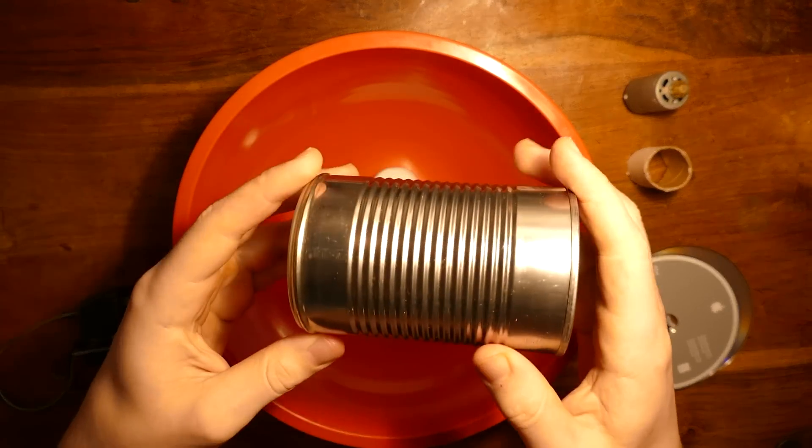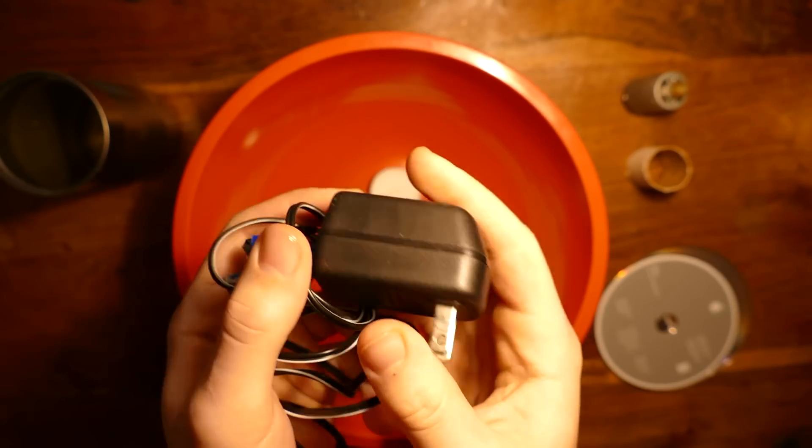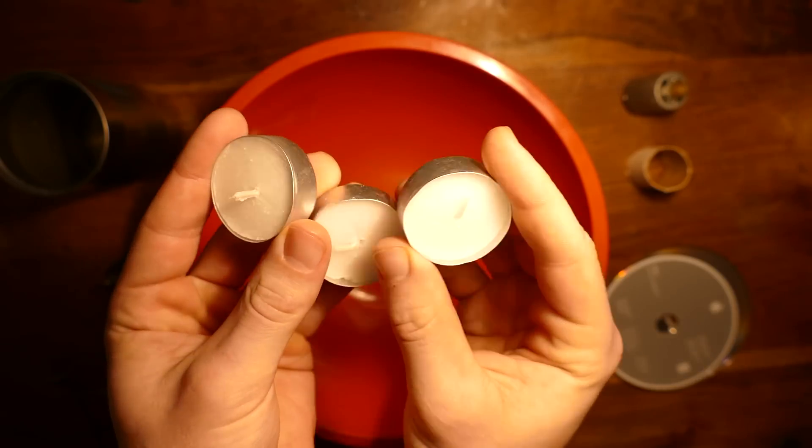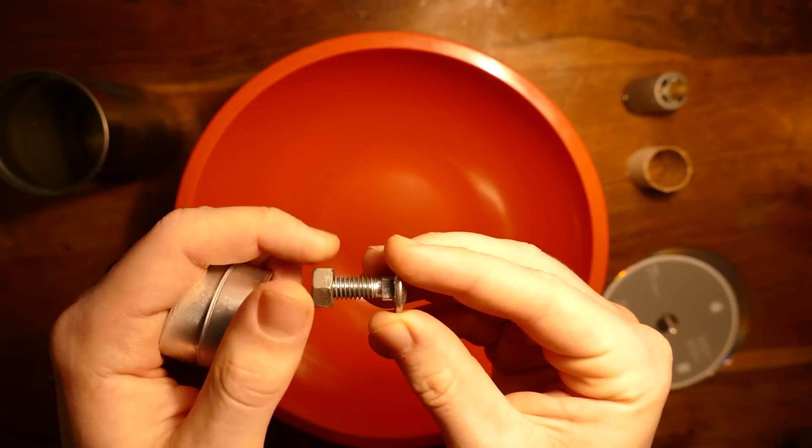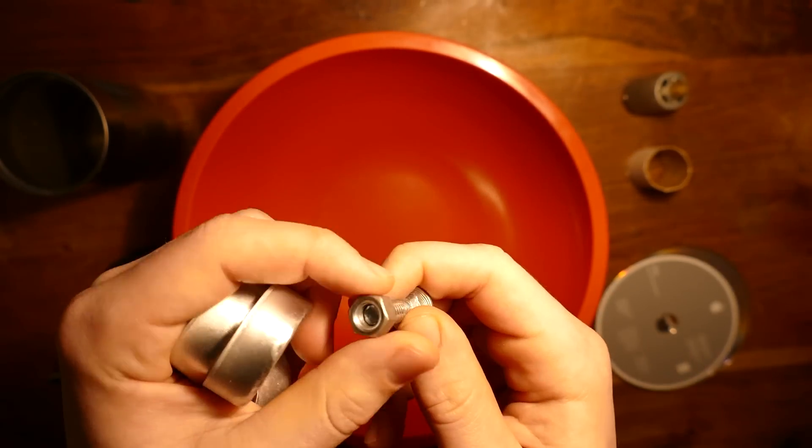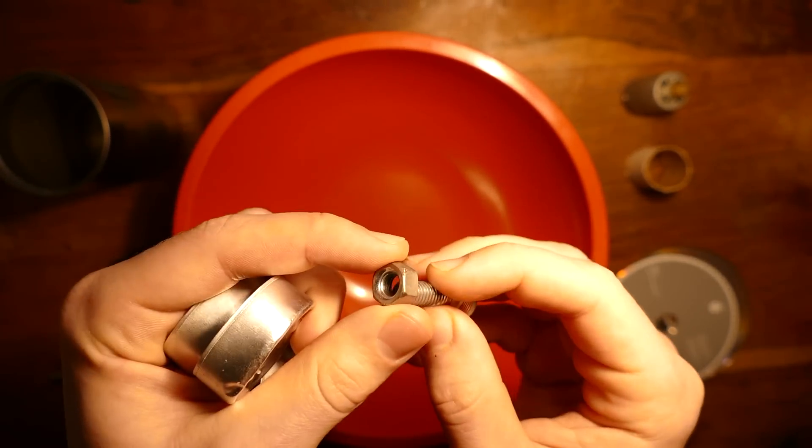For materials we're going to need a soup can, an old DC power brick, preferably with an output of around 5 volts, a few tea light candles, and a 1 inch bolt with a few nuts that fit onto it. It doesn't really matter the diameter, but preferably thicker for better support.